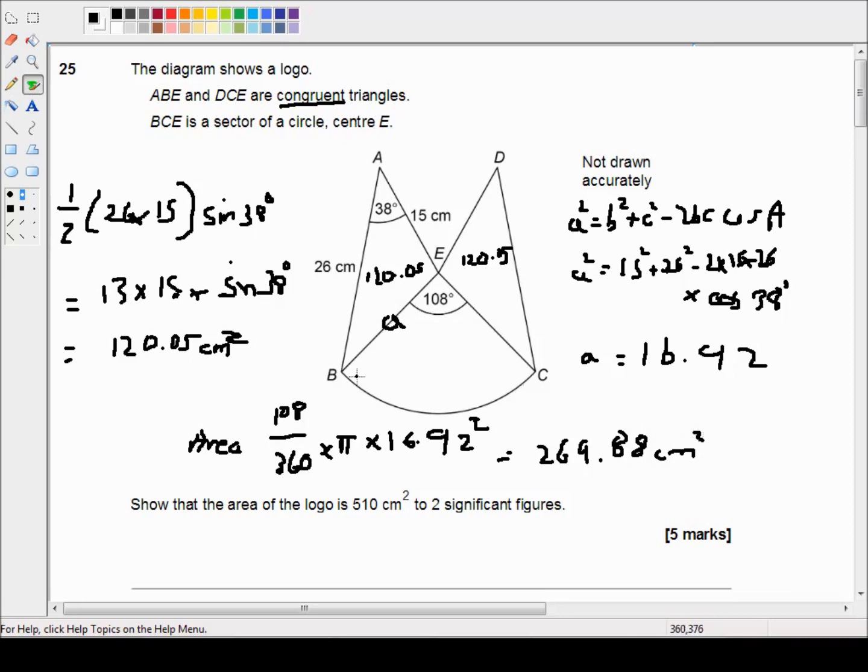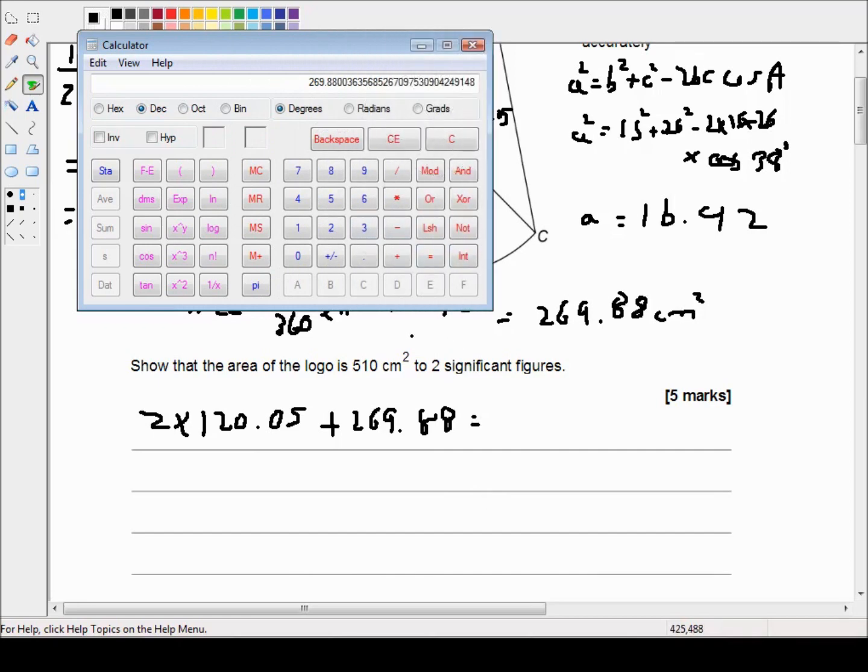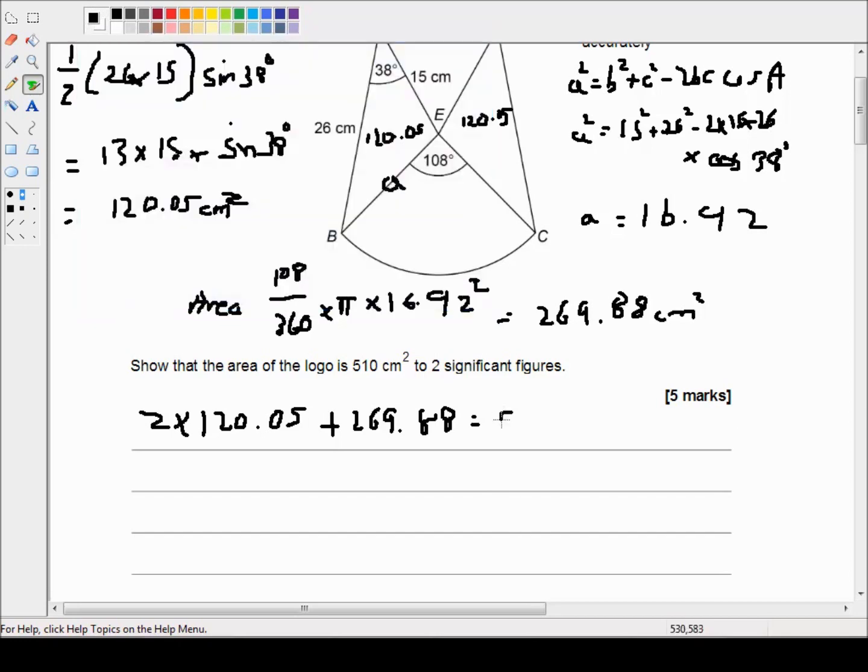So the area of the whole logo is 2 times 120.05 plus 269.88. And again I'll need my calculator. Okay, so I've got my calculator. I'm just going to add 2 times 120.05. That'll get me close enough to the answer. 509.98 centimeters squared.